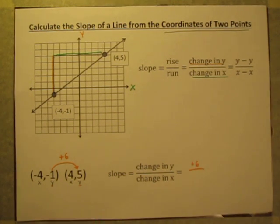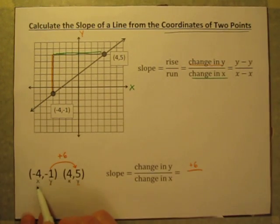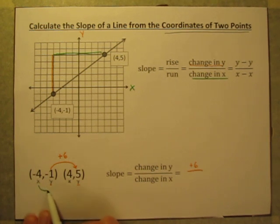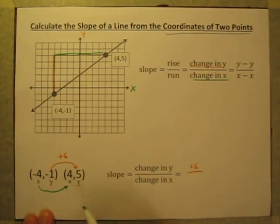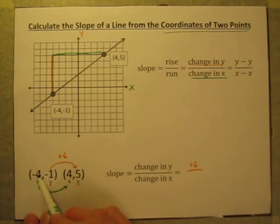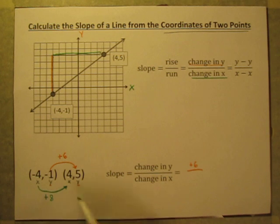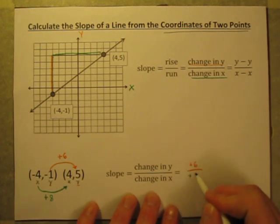What is my change in x? The change in x is going to be how much we are moving along the x-axis. We are going from negative 4 up to positive 4 — that is an increase. Negative 4 plus 8 is equal to positive 4. So I know my run, or my change in x, is plus 8.